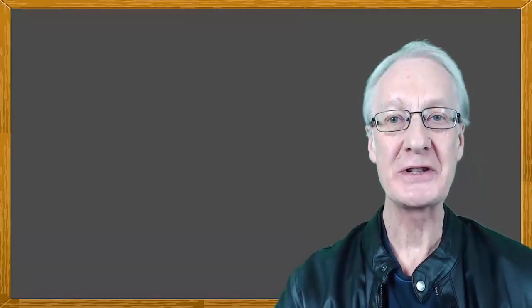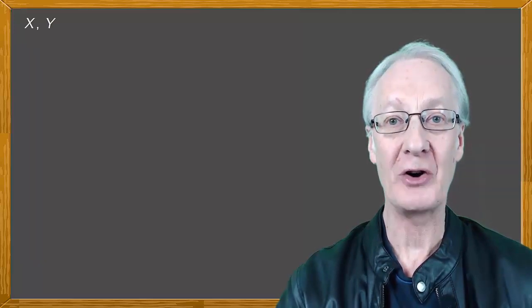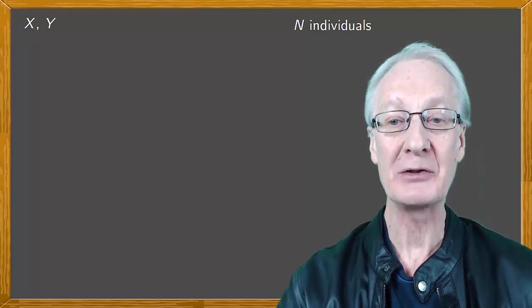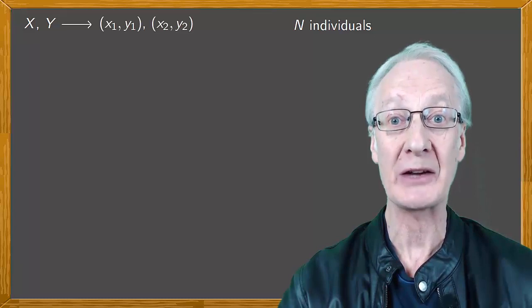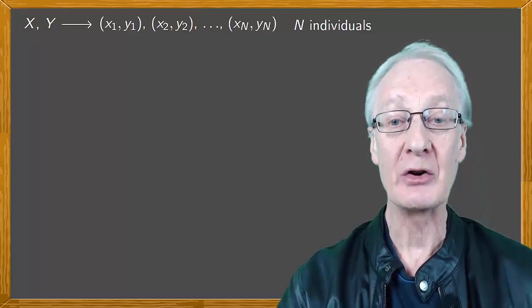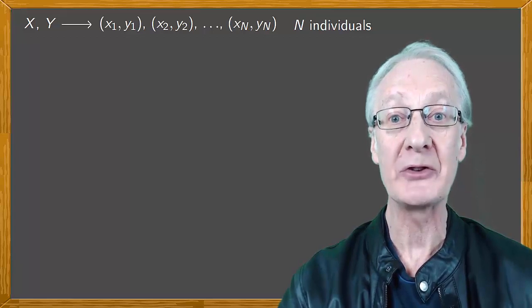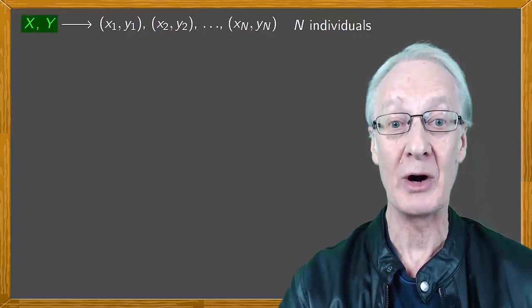Consider two statistical variables x and y defined on a sample of n individuals. So we're dealing with a pair of numerical values for each of the individuals in the sample: x1 y1, x2 y2, all the way up to xn yn. We're going to introduce two parameters, the covariance and the correlation coefficient, with the aim of studying the relationship between the variables x and y.